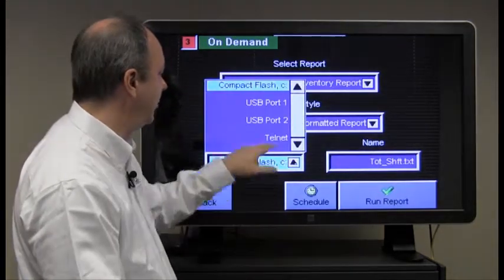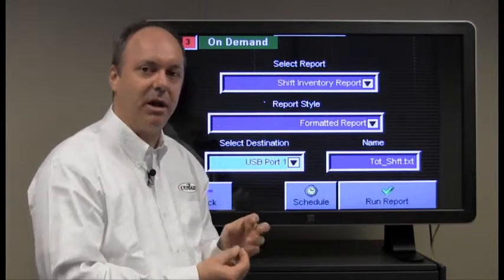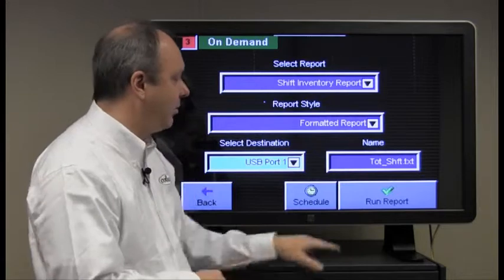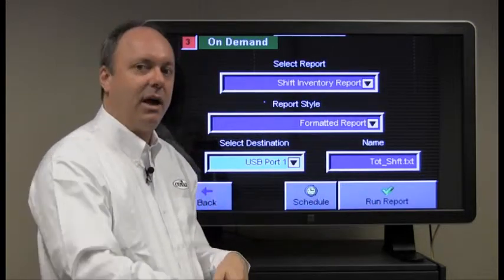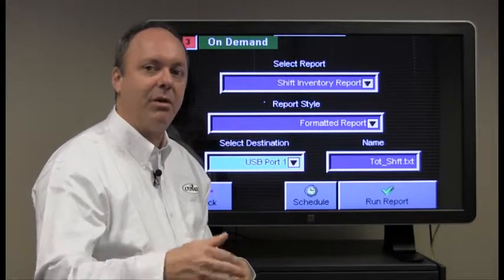If you selected a USB connection or destination, you'd simply plug the USB thumb drive into the bottom of the touch screen for the blender, run the report and then remove the thumb drive and take it to a PC and copy it off of the thumb drive.